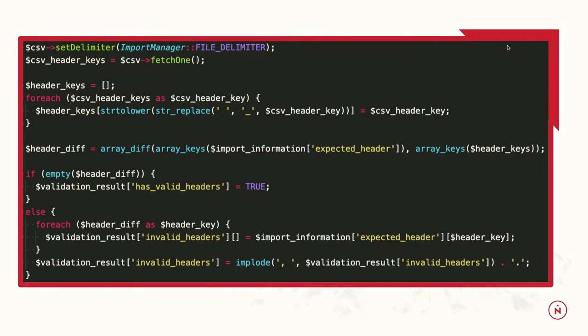This is the code that runs after checking the delimiter. It converts the headers in the file to a machine name style and cross-references those with our expected header and import mapping. If we're matching and all good, it sets hasValidHeaders to true. If not, it gives a nice string version of exactly which specific headers are wrong, because they might not know either — they probably got the file from their data people who got it from other data people.